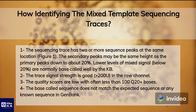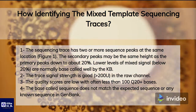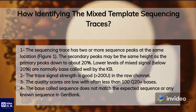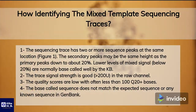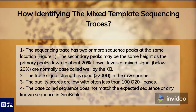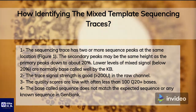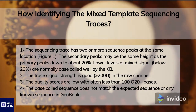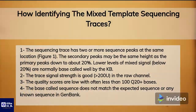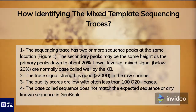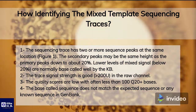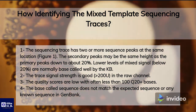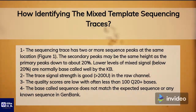Lower levels of mixed signal, below 20%, are normally base called well by the KB basecaller. The trace signal strength is good, greater than 200 U in the raw channel. The quality scores are low, with often less than 100 Q20 plus bases. The base call sequence does not match the expected sequence or any known sequence in GenBank.